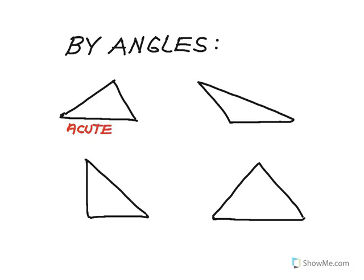If the measure of one of the angles is greater than 90 degrees, I have one obtuse angle — and that's all I can have in the figure, I can't have more than one obtuse angle — I call the triangle an obtuse triangle. If I have a right angle in the figure, and again I can't have more than one right angle in a triangle, I just call it a right triangle.